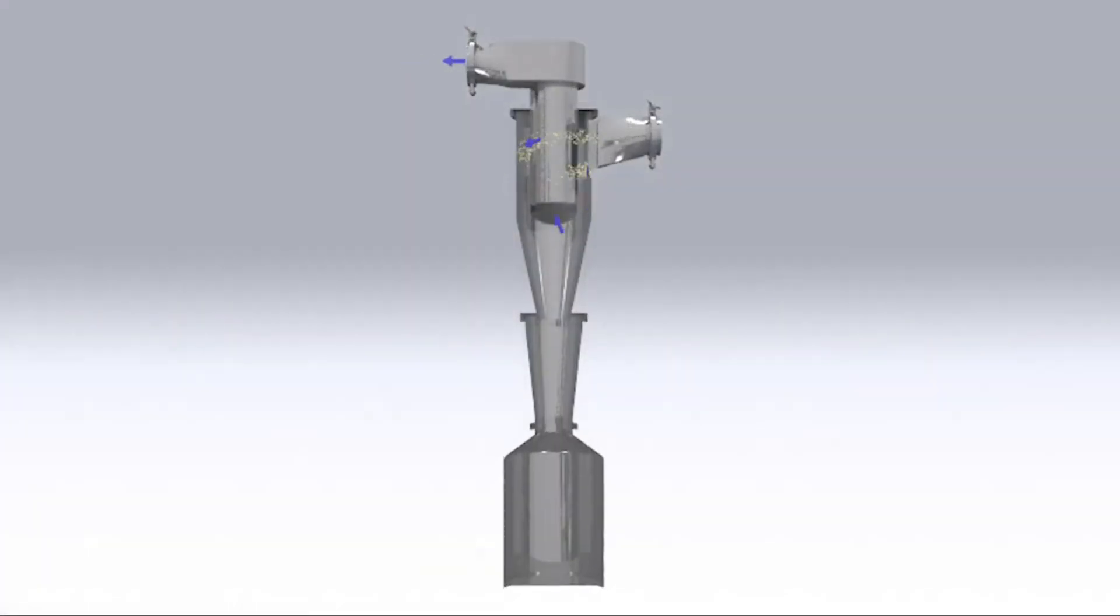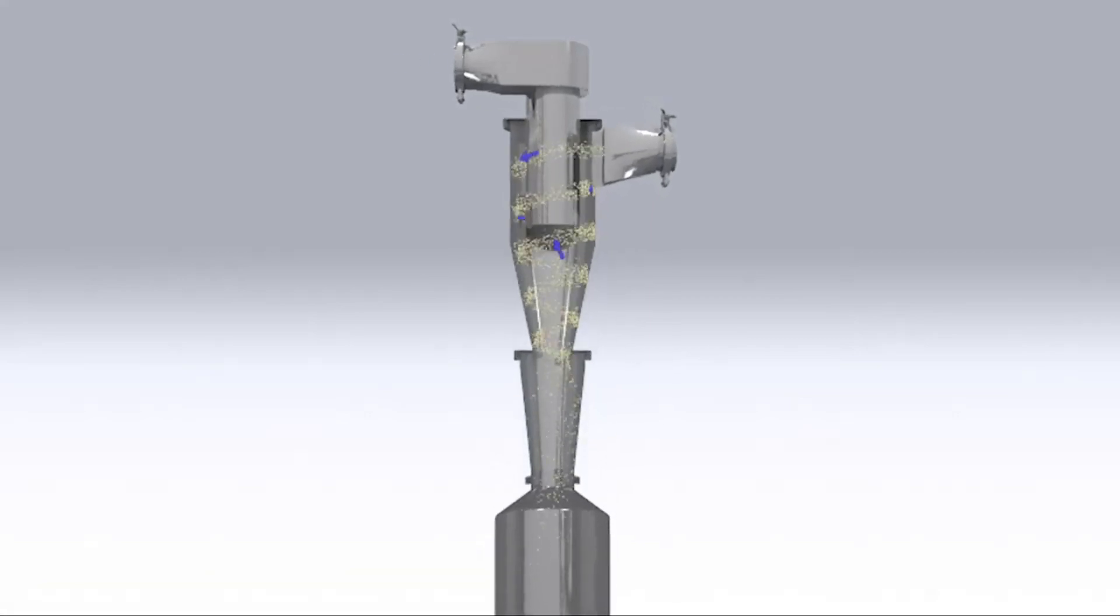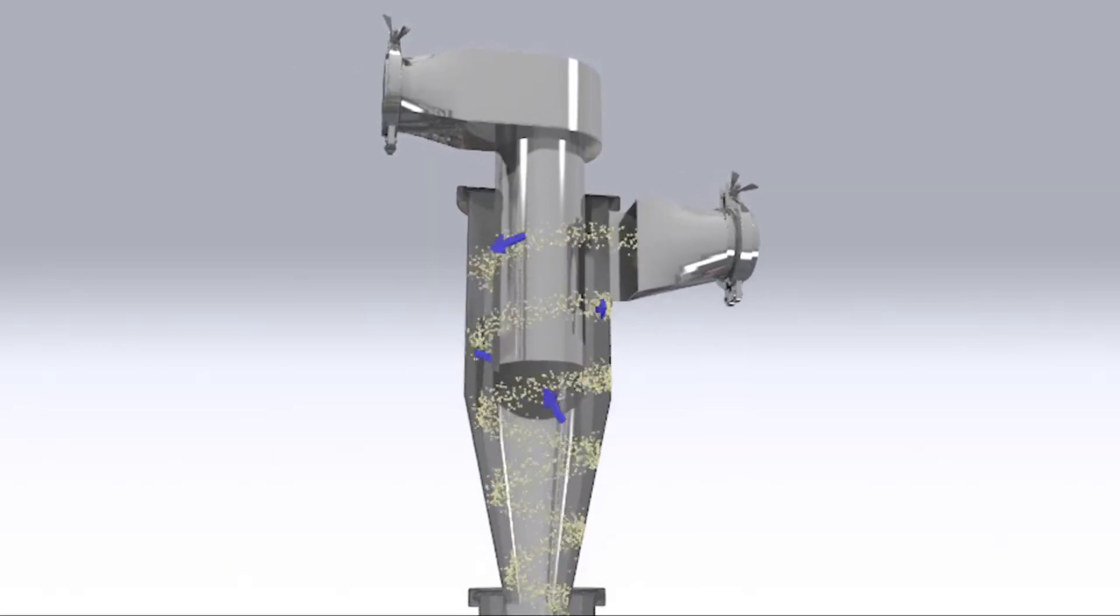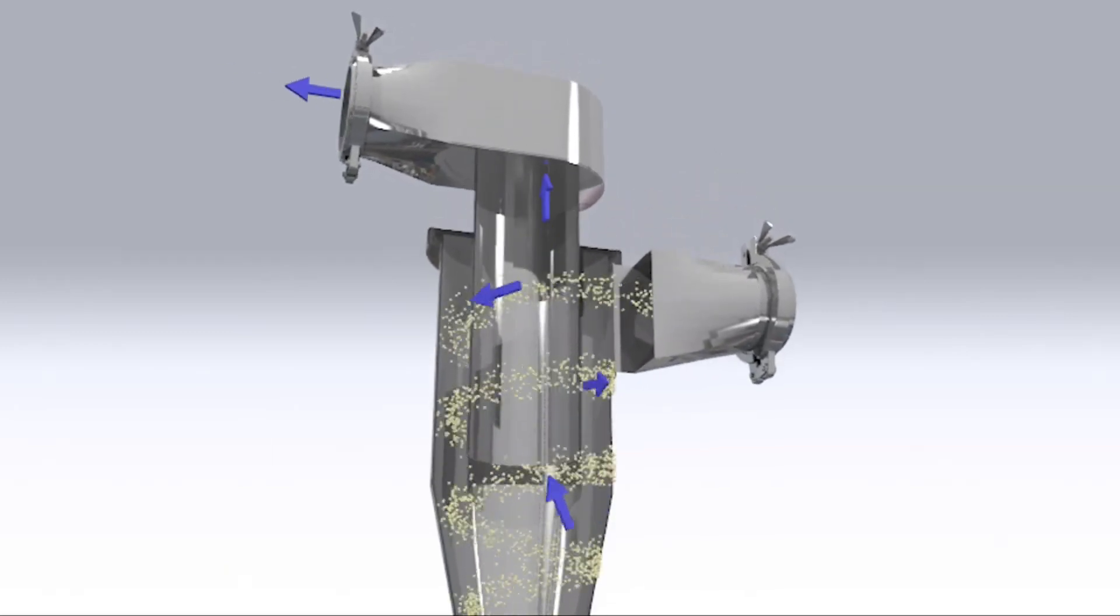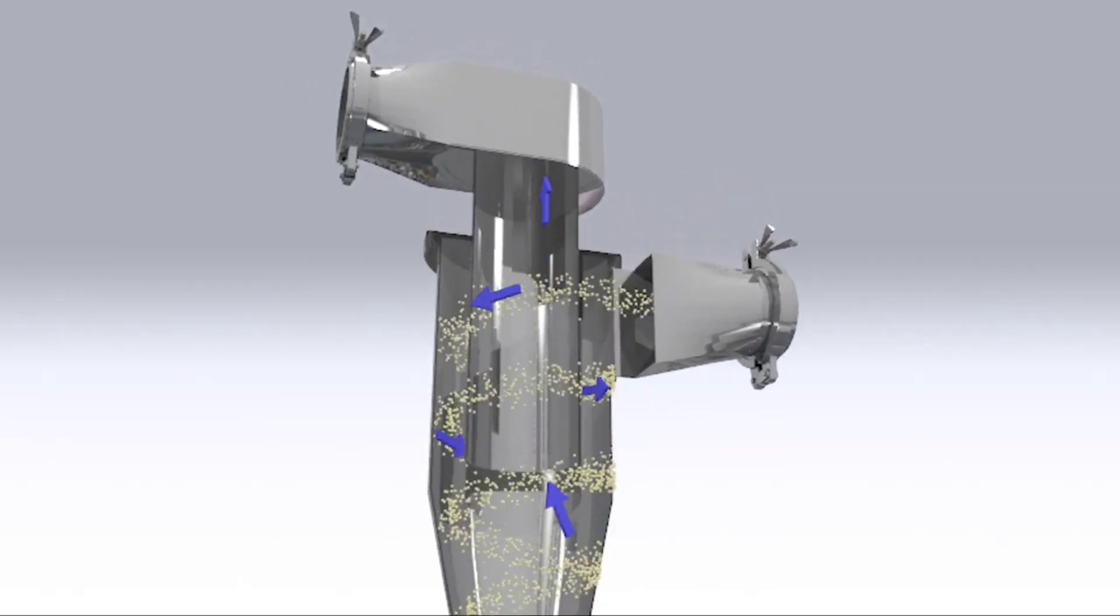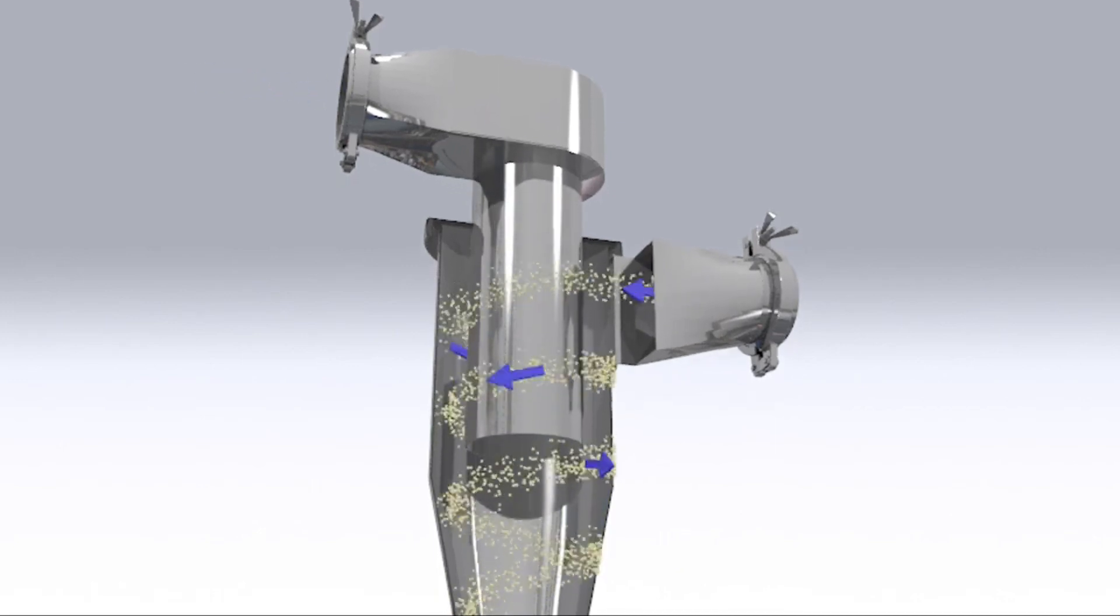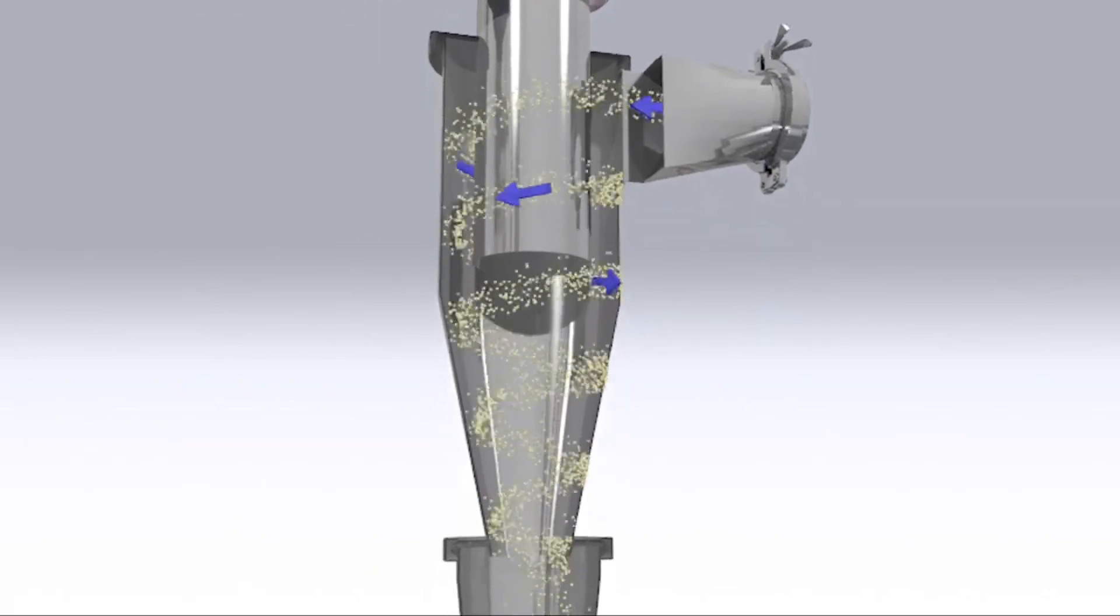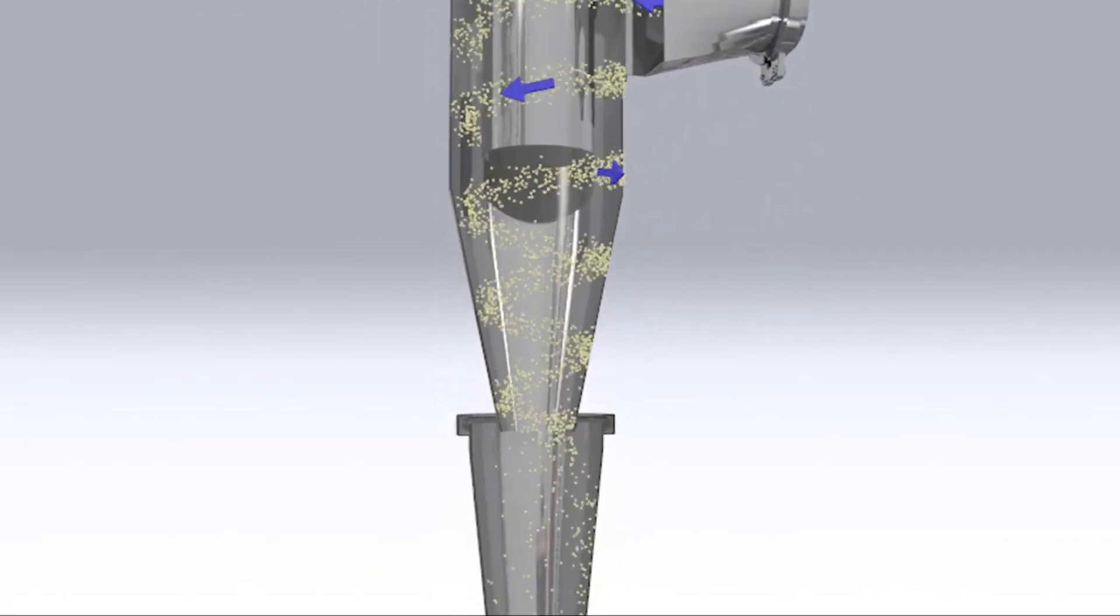Inside the cyclone, vortex separation causes the solid particles to hit the outside wall of the cyclone and fall to the catch pot, allowing clean air to pass downstream to the dust extraction source. The captured waste material can be used for batch loss reconciliation, or even reintroduced to the process where protocol permits.